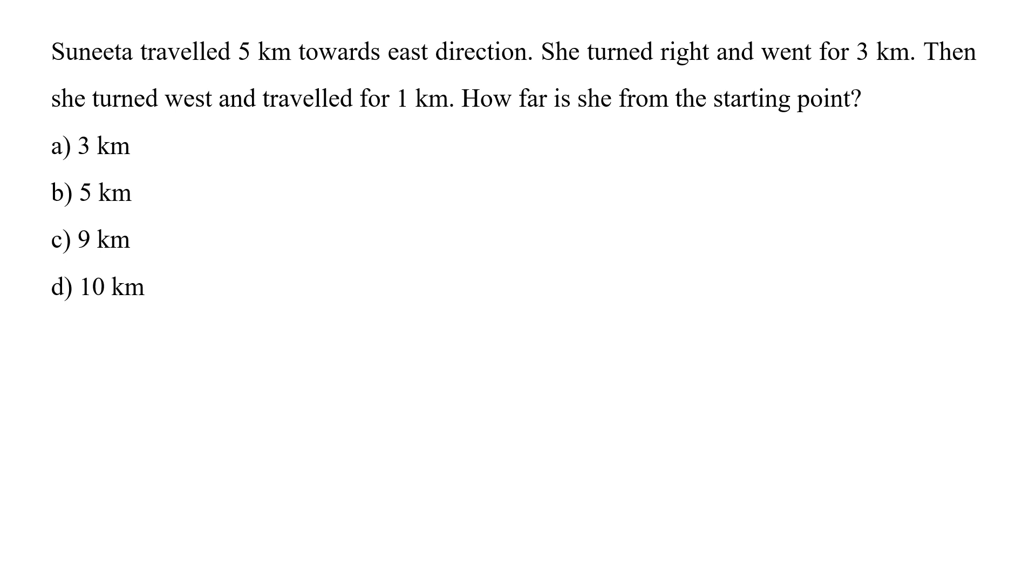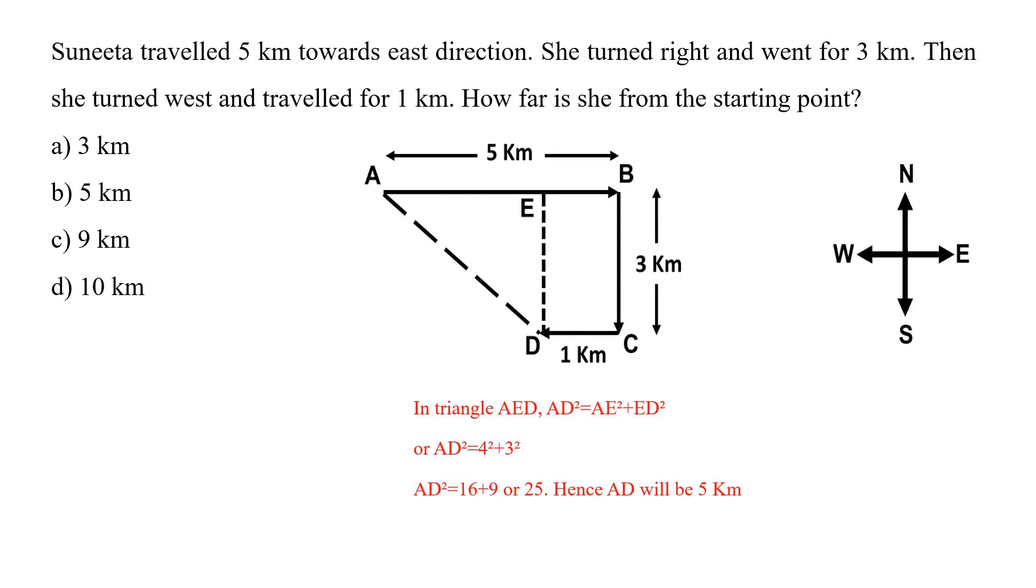Sunita traveled 5 kilometers towards east direction. She turned right and went for 3 kilometers. Then she turned west and traveled for 1 kilometer. How far is she from the starting point? So if we see the diagram, then we will find out that she started from point A and went up to B that is 5 kilometer. Then she moved from B to C that is for 3 kilometer and from C to D that is for 1 kilometer. Now we have to find out how far she is from point A. That means we have to find out the distance from A to D. If we see with a point E which is an imaginary point, then we can find out that B, C, D, E forms a rectangle. And now the remaining distance that is A, E would be of 4 kilometer while D, E would be of 3 kilometer. So in a triangle A, E, D if we solve it, then we will find out that the distance of A, D would be 5 kilometer which is the option B. So option B is the correct answer.